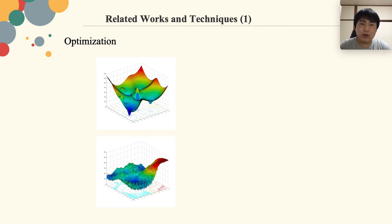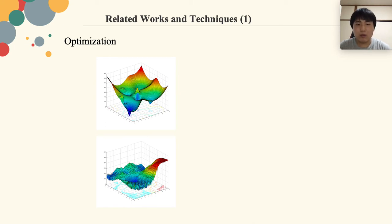However, evolutionary computational algorithms are able to find the global optimal much more easily in this situation. In the real world, we cannot see all the problems from the perspective of God. When we want to find the optimal solution for a complex problem, we cannot easily obtain the fitness landscape of the problem, especially in high-dimensional problems.